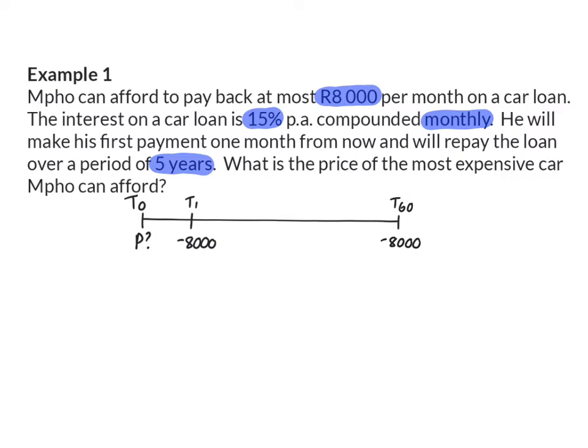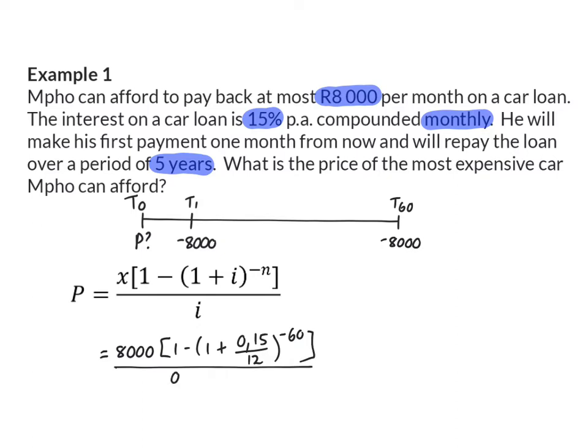Now we can substitute all of this information into our present value formula. We know that his payment each month will be R8000. We also received that the interest rate is 15% compounded monthly. This rate should always be in the same period as the payments, and here both of them are monthly. Mpo will be making 60 payments in this period. And in the denominator we once again have our interest rate of 15% compounded monthly.